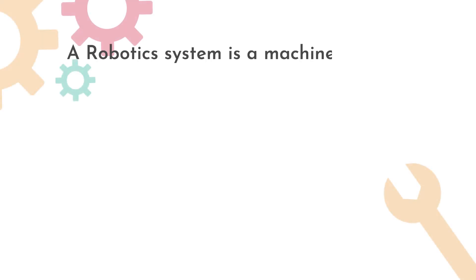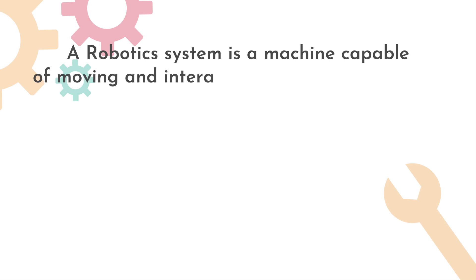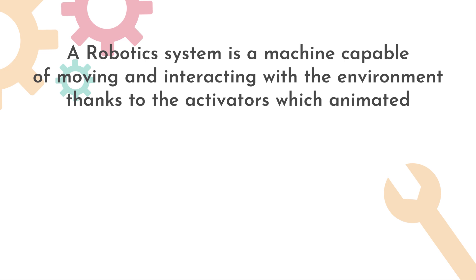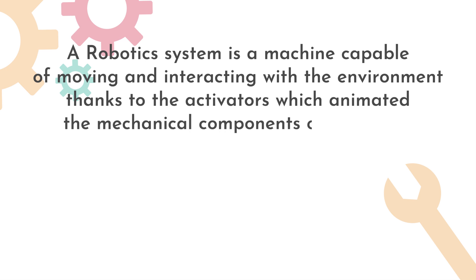What is robotics? Robotics and technology in general are particularly fascinating subjects which over last decades have invaded our living space, radically changing our lifestyle. But what really is robotics? Here is a simple definition. A robotic system is a machine capable of moving and interacting with the environment thanks to the actuators which animate the mechanical components of the robot.